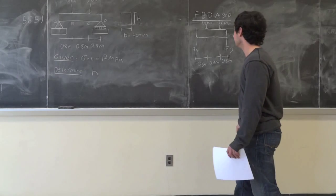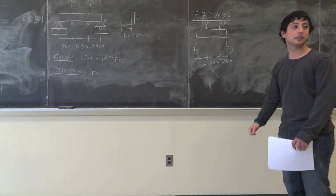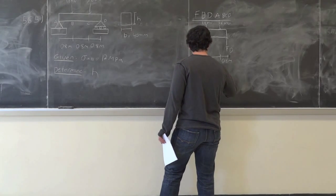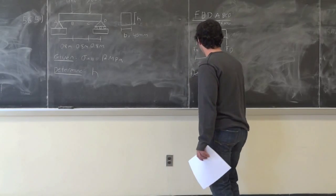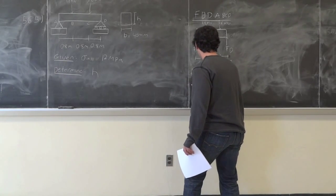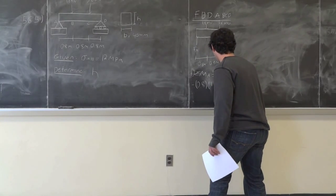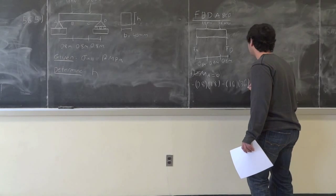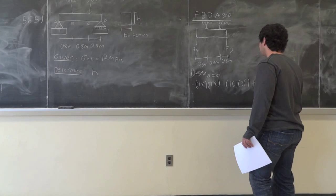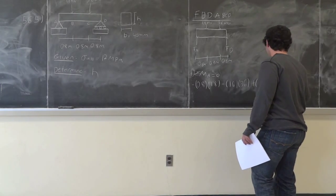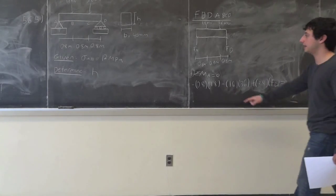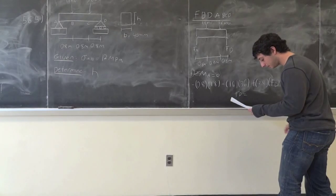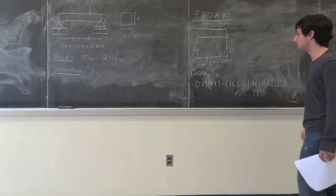So how are we going to find F_A or F_D? Sum the moments at A or D. So let's sum the moments at A to get F_D. You have 0.8 minus 1.6 multiplied by 3.6 plus 2.4 multiplied by F_D is equal to 0. From summing the moments at A, you get F_D is equal to 3 kN. So we found the reaction at D.